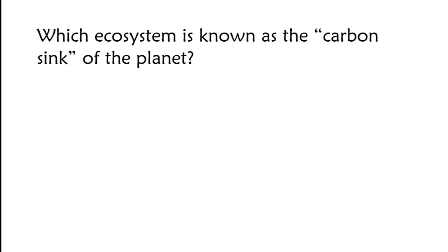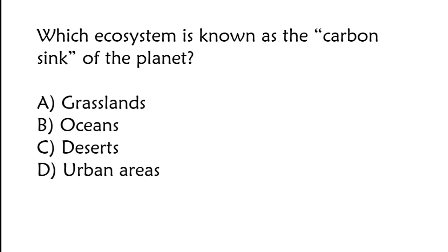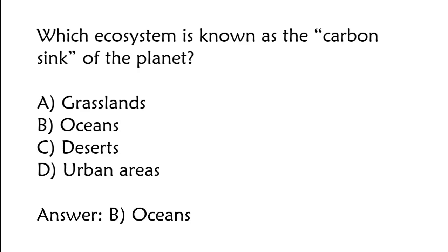Which ecosystem is known as the carbon sink of the planet? A) Grasslands, B) oceans, C) deserts, D) urban areas. The correct answer is option B, oceans.